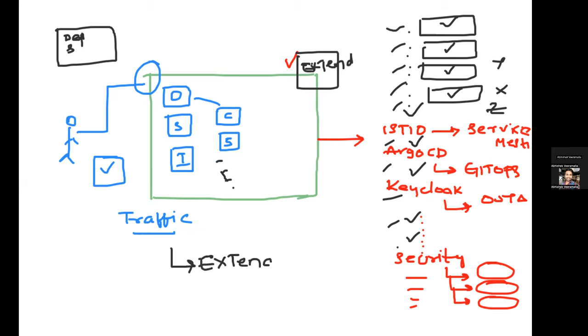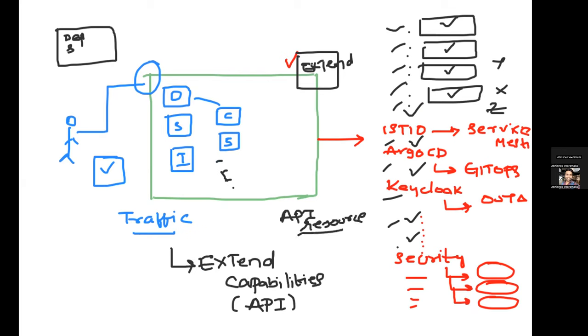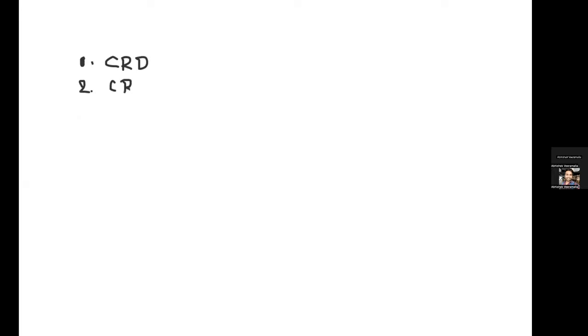Kubernetes is saying: we will allow you to extend the capabilities or extend the API of Kubernetes. You can add a new API resource to Kubernetes. Using this resource you can ask your users — for example whoever wants to use Istio — to deploy a few resources and extend the Kubernetes cluster, but Kubernetes is not going to support it natively. To extend the API, there are three resources: CRD, CR, and custom controller.